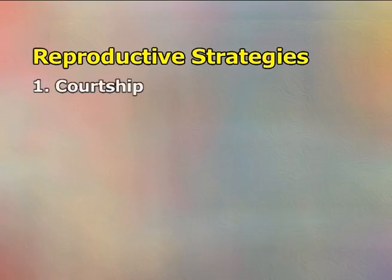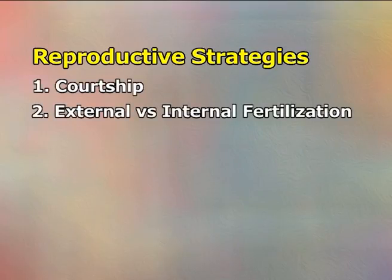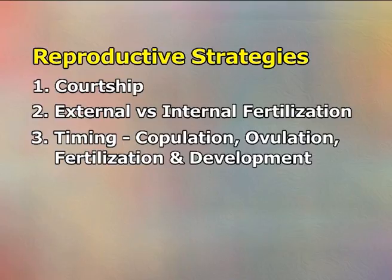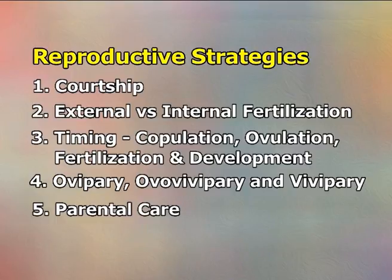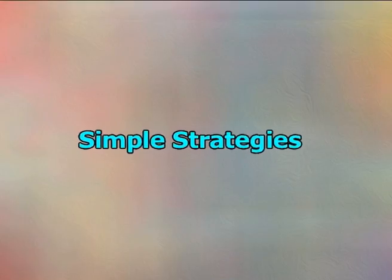Unique reproductive strategies have developed to ensure maximum reproductive success. Reproductive strategies include: 1) courtship, 2) external versus internal fertilisation, 3) timing of copulation, ovulation, fertilisation and development, 4) oviparity, ovoviviparity and viviparity, and 5) parental care. Courtship in animals is behaviour designed to attract another animal for mating or breeding. Simple strategies include chemical, visual and auditory stimuli, the purpose of which is to attract a mate.